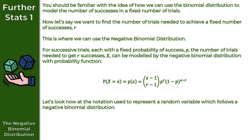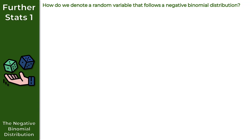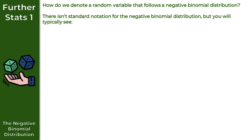Let's look at the notation used to represent a random variable which follows a negative binomial distribution. There isn't a standard notation for the negative binomial distribution, but you will typically see one of two things: either X follows negative B with parameters R and P, or X follows NB with parameters R and P — NB meaning negative binomial. Throughout these videos I will use the first notation, but the second is also fine.